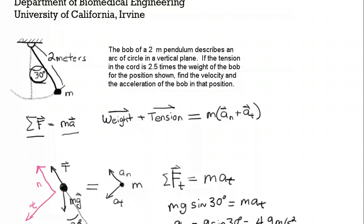And so what does that mean? Let's go back up here and look. You can see that the, we're talking about the tension in the cord is 2.5 times the weight of the bob at this position shown. The position being 30 degrees angle. And so the mass could either be going up or down.